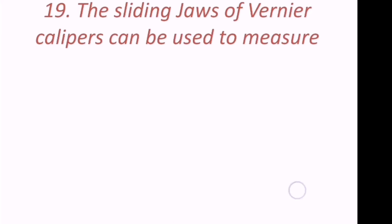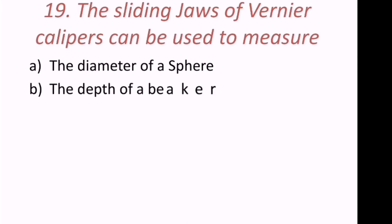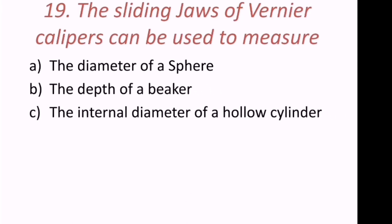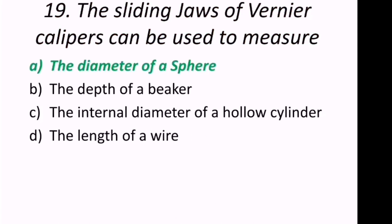Nineteenth question: The sliding jaws of vernier calipers can be used to measure what? The options are the diameter of a sphere, the depth of a beaker, the internal diameter of a hollow cylinder, or the length of a wire. The correct answer is the diameter of a sphere.